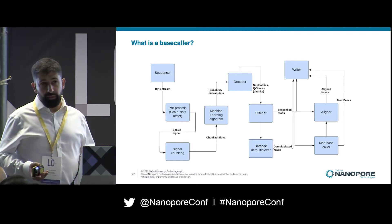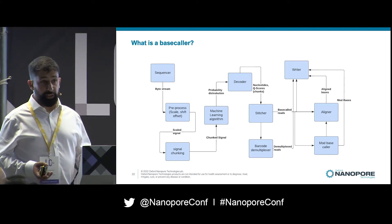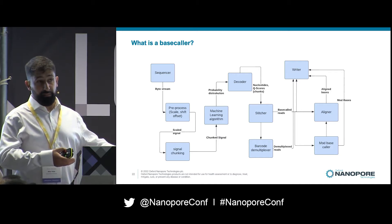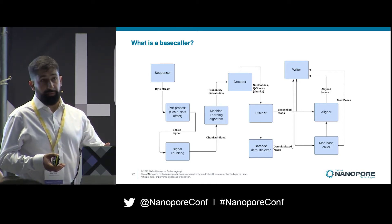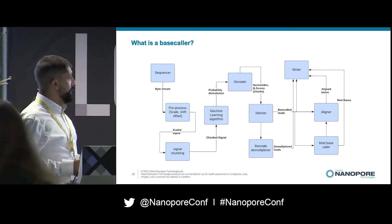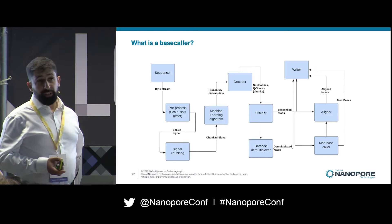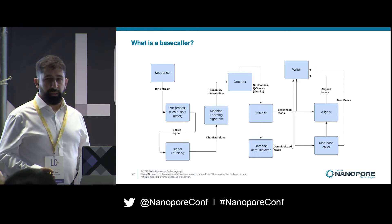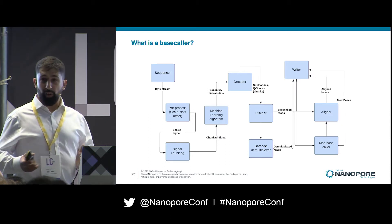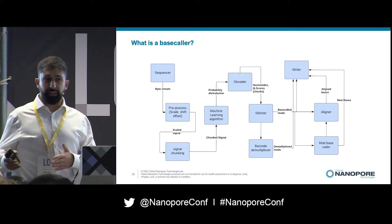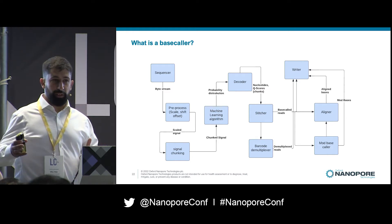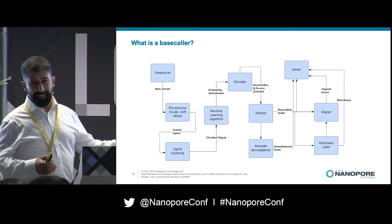In the case of ONT signals, preprocessing involves scaling and shifting data — taking bit streams coming off the sensors and converting them into picoampere current levels. Then there's a process called signal chunking. Our reads are variable length, but for performance reasons we like to operate in fixed-length chunks. So there's a process called signal chunking where we split that signal up into chunks, and then we have to worry about that later.